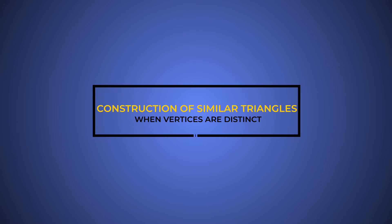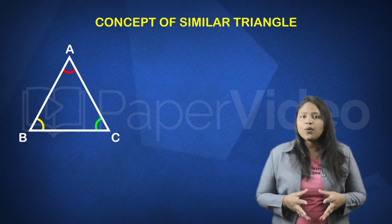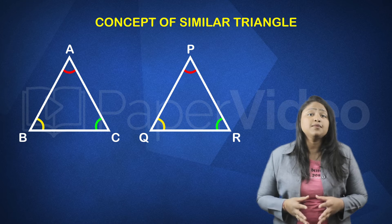Construction of Similar Triangle When Vertices Are Distinct. If we are given a triangle, then how can we construct another triangle similar to it?